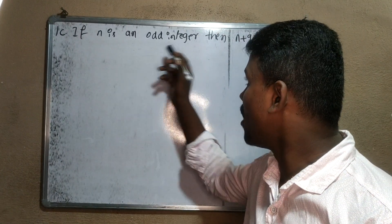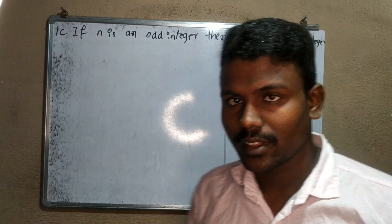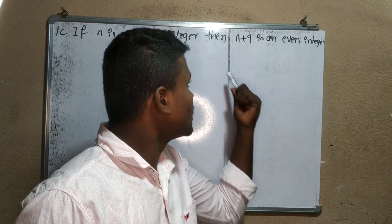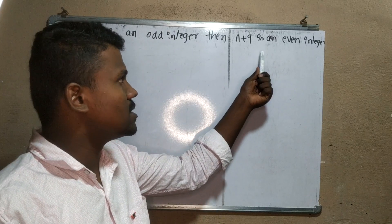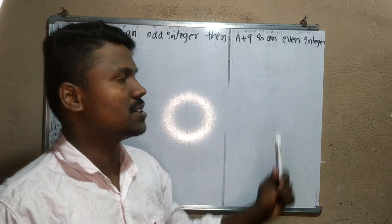So the proposition is: if n is an odd integer, then n plus 9 is an even integer.